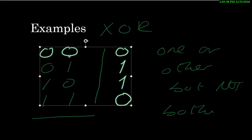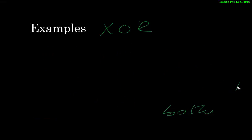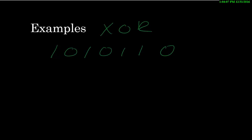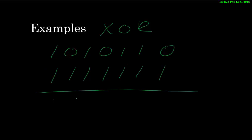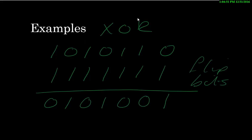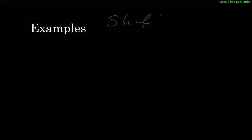Exclusive OR means either or the other can be set but not both. You can use this to flip bits. Take an example with a mask where you want to change specific bits — using that mask with XOR will flip those bits: setting some to zero, others to one. So XOR is useful for changing or toggling bits.